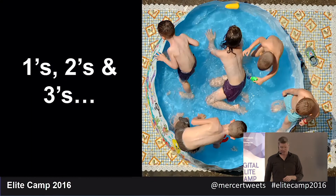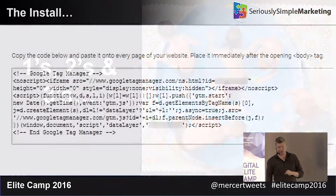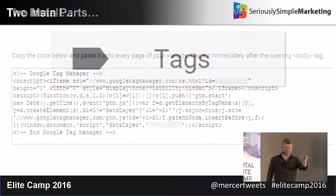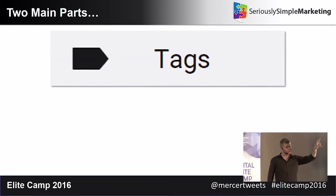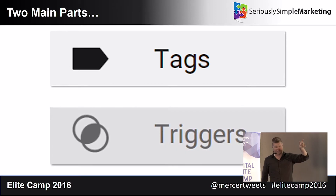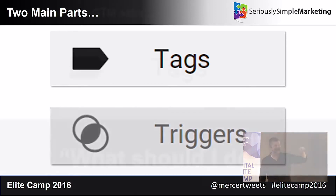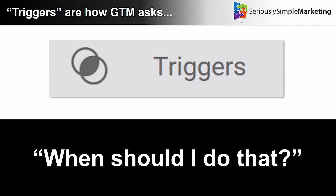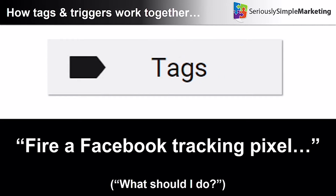Let me cover this quickly for the ones, twos, and threes. The install is very simple — it's just a piece of script you put in your page. There are two main parts: tags and triggers. A tag is what you want Tag Manager to do — fire a pixel, report a page view, anything like that. A trigger is when it should do that. That's all it really is: tags and triggers.